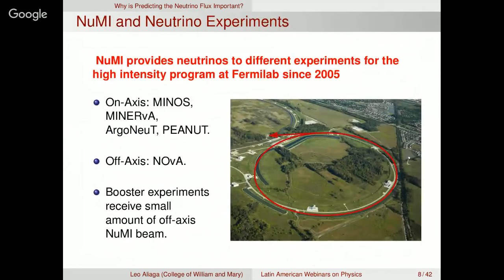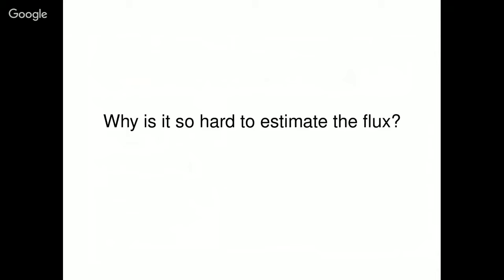Many experiments share the NUMI beamline. There are on-axis experiments like MINOS and MINERvA, older experiments like ArgoNeuT, and off-axis experiments like NOVA. There is also the booster beamline at Fermilab. The idea was that if we can handle the flux determination problem, it can be shared with other experiments. But why is it so hard to estimate the flux? There are two leading causes of a bad flux prediction.